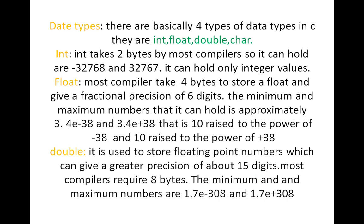There are basically four types of data types in C: int, float, double, and char. The int type generally takes 2 bytes, which is 16 bits. One bit is used for the sign, and the remaining 15 bits give a range of -32,768 to 32,767. So an integer variable can only hold integer values within that range.